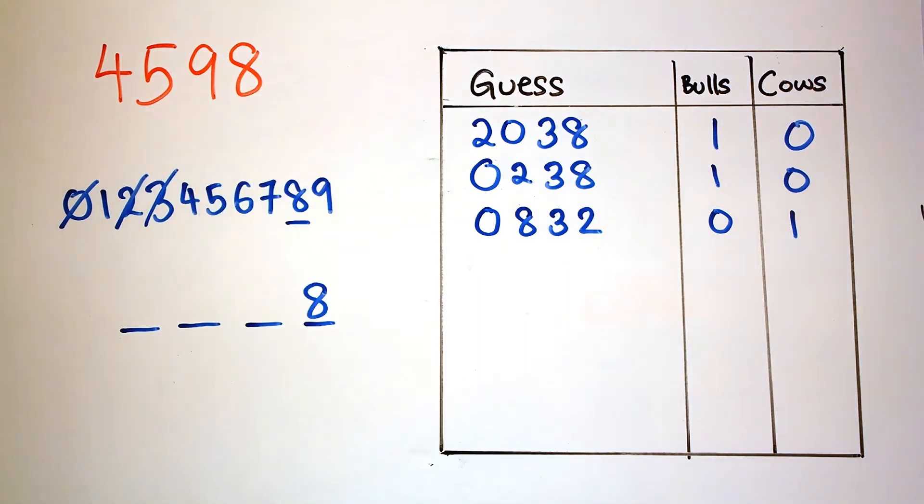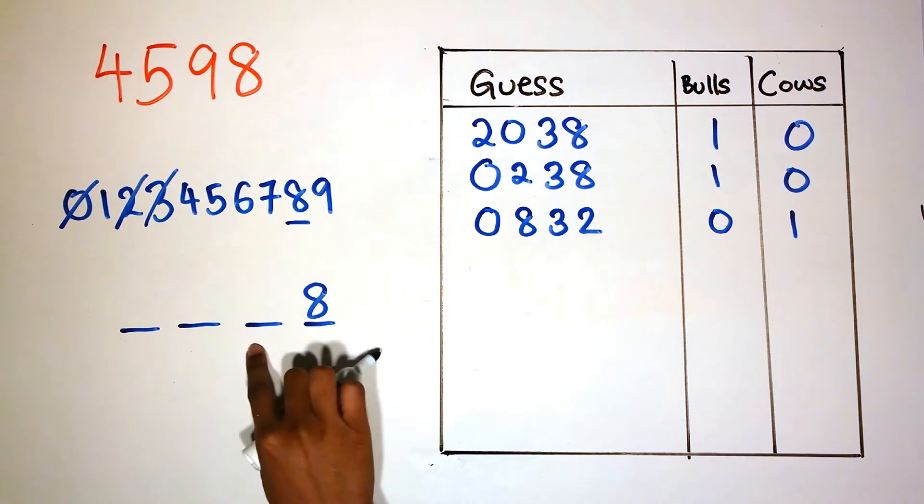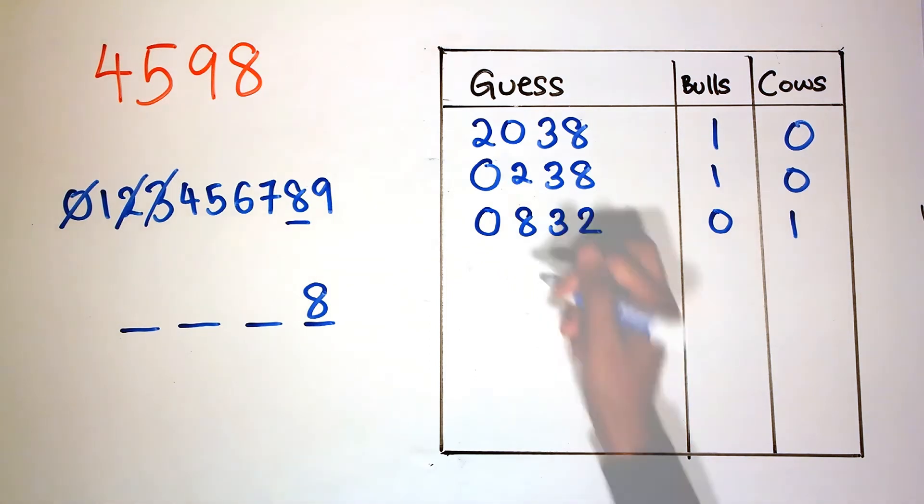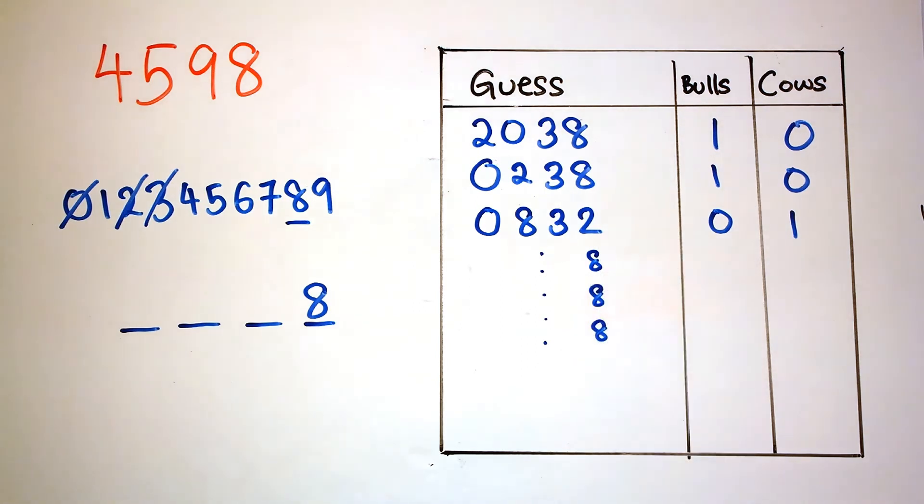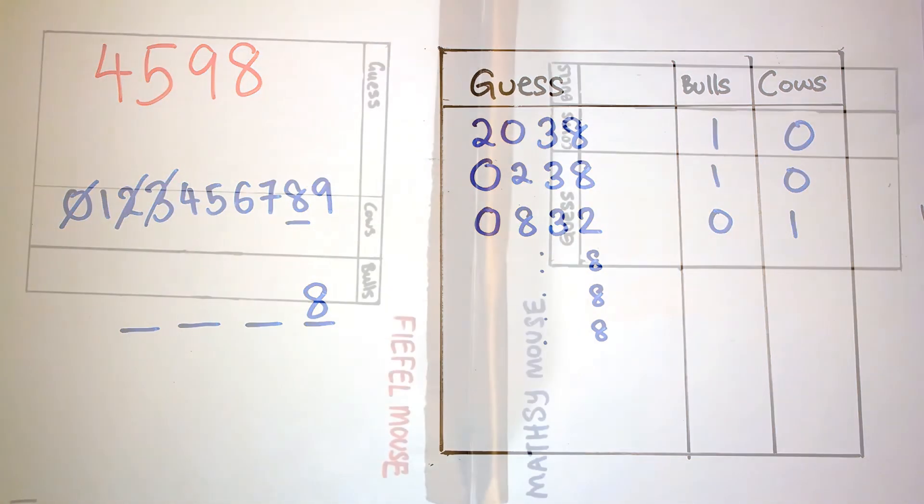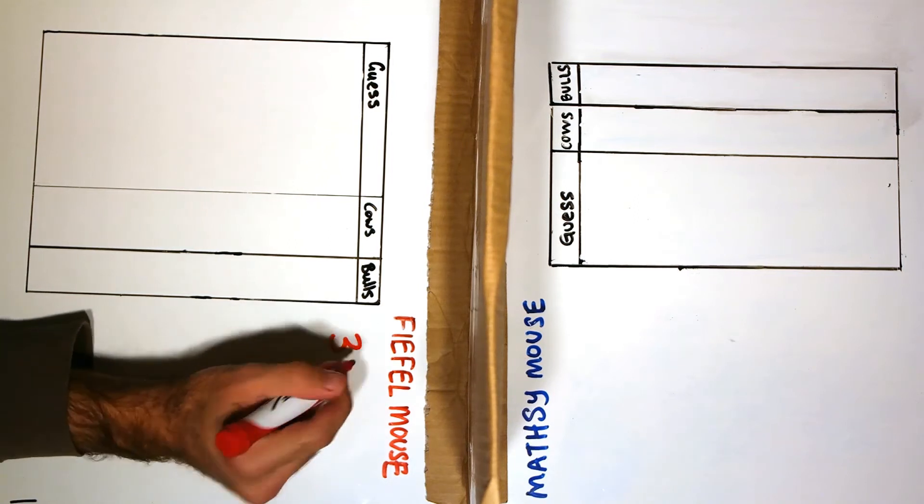This process continues with the 7 possible numbers to fill up the 3 positions, with 8 fixed at the end. The first one to reveal the other's secret number wins the game, so when playing with a friend, take turns on who goes first in guessing.